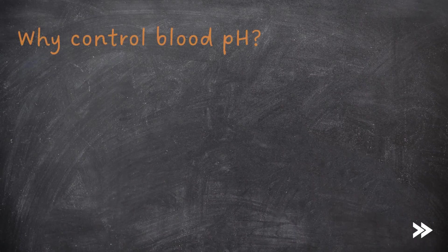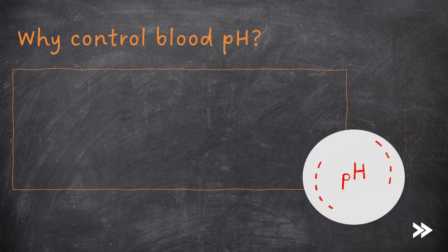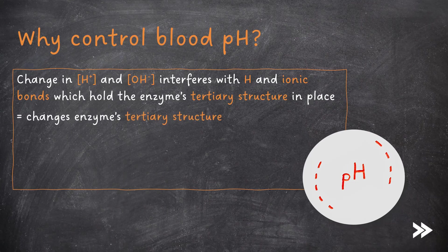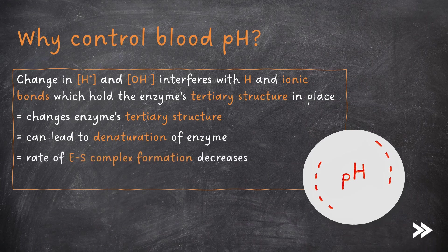What effect does pH have on enzymes? Well, the change in concentration of H-plus and OH-minus ions, like before with high temperatures, interferes with hydrogen and ionic bonds which hold the enzyme's tertiary structure in place, hereby altering the enzyme's tertiary structure, which can lead to denaturation of the enzyme, so the rate of enzyme-substrate complex formation decreases, so the rate of reaction decreases. To recap factors that affect enzyme activity, which includes temperature and pH, just follow the link to my video on enzymes top right.